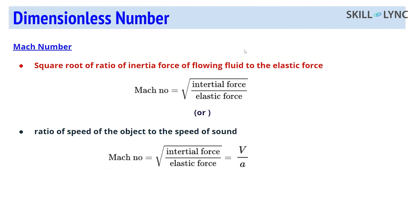The ratio of inertia forces to elastic force, when square-rooted, gives the speed of sound - what we call the Mach number, which is V divided by a, the speed of the object over the speed of sound.